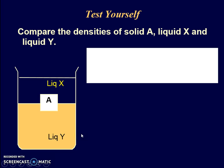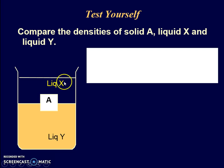If you look at this beaker containing liquid X, object A, and liquid Y, let's compare their densities. Which of these will have the lowest density? It will be the one floating right at the top — X. X has the lowest density, therefore it can float. Followed by A, which has a higher density than X, and Y has the highest density, which is why it sits right at the bottom.